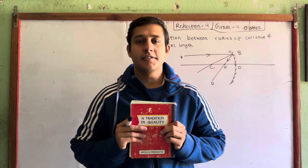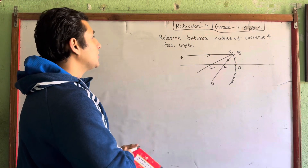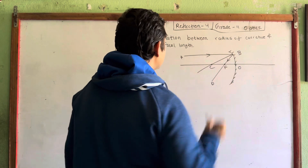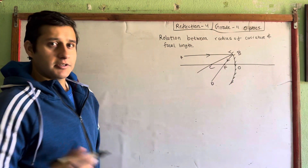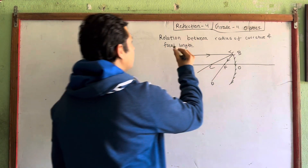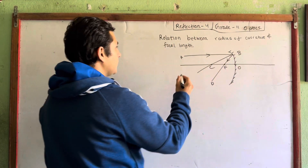Hello, welcome to all of you. I am here in grade 11, reflection, part 4, optics. This is the important thing here: the relationship between radius of curvature and focal length.